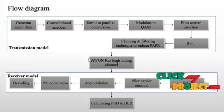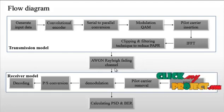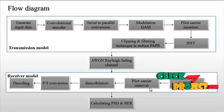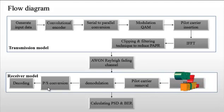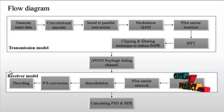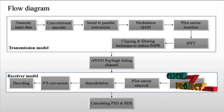These form the transmission model. Then the AWGN and Rayleigh fading channel — that is the Additive White Gaussian Noise channel — is applied to reduce fading. In the receiver model, the inverse of the transmission process is applied: FFT, pilot carrier remover, demodulation, parallel to serial conversion, and decoding. Finally, the PSD — power spectral density — and BER are calculated.